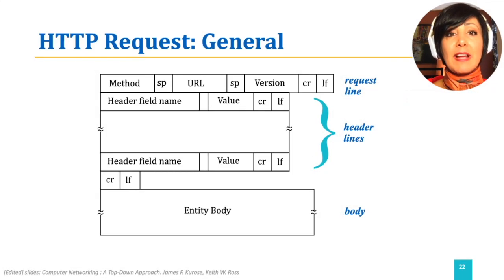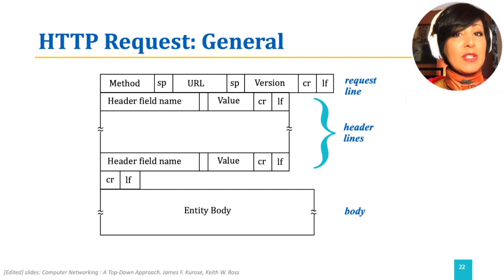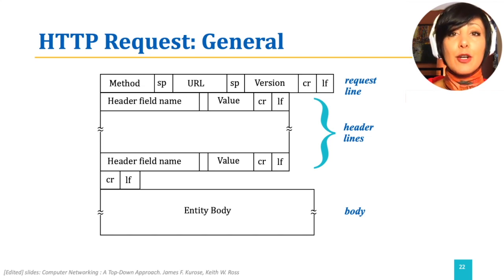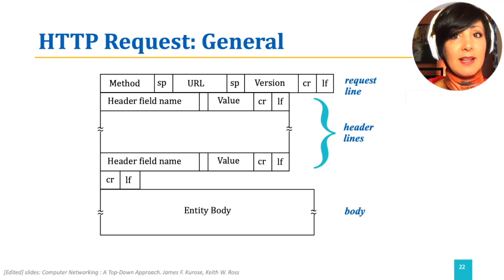The general format of an HTTP request is as shown in this figure. The request line contains the method, URL, and version separated by spaces, followed by carriage return and line feed. Then come the header lines, each with a header field name, the value of that field, and carriage return and line feed. Finally, there is the entity body, which could be empty as in the GET method, or have contents as in the POST method.